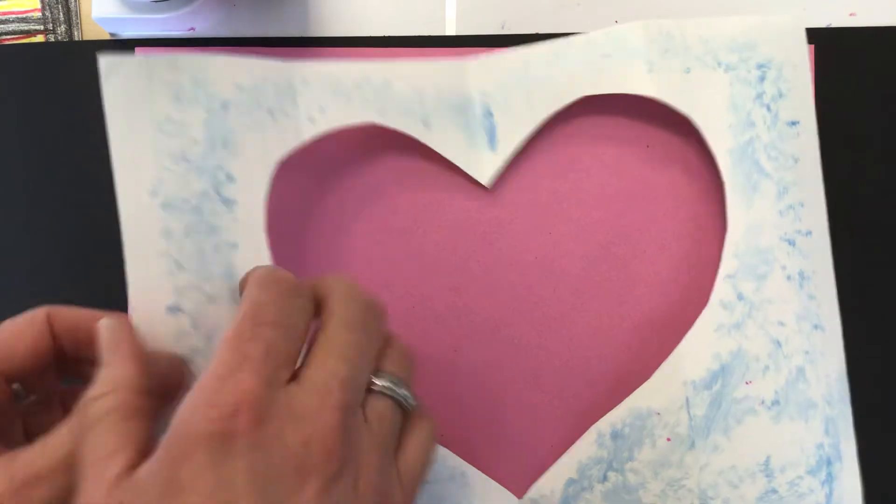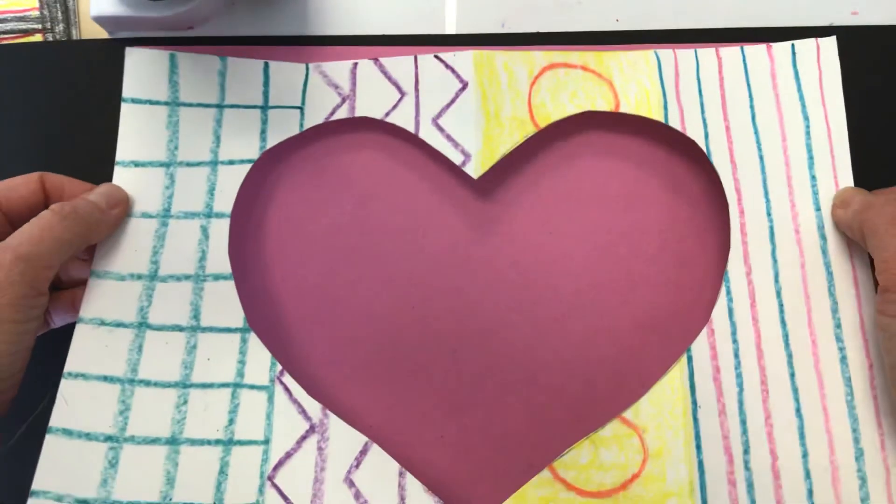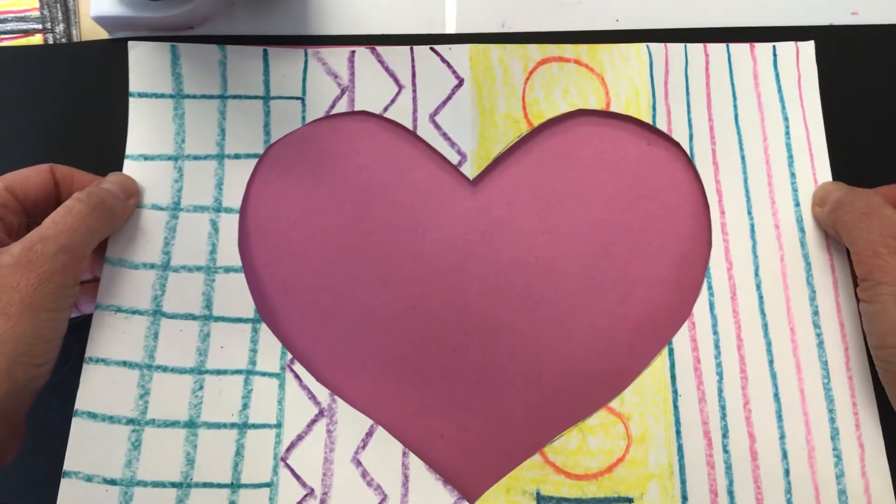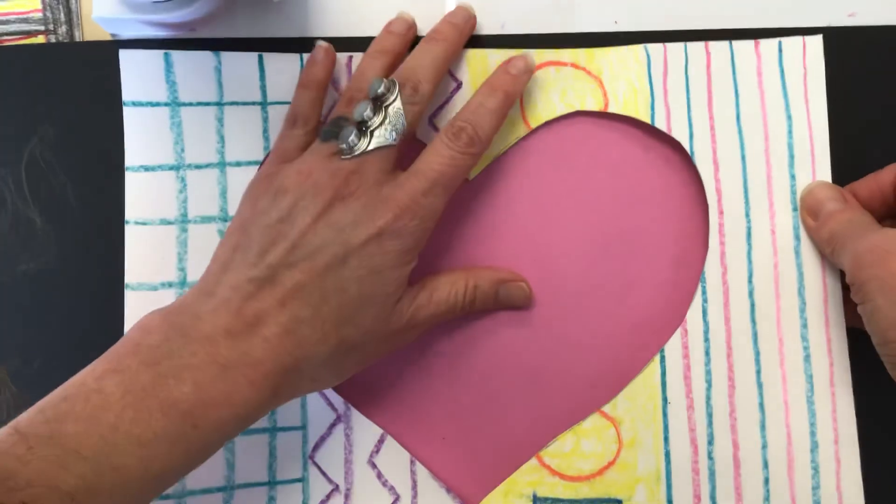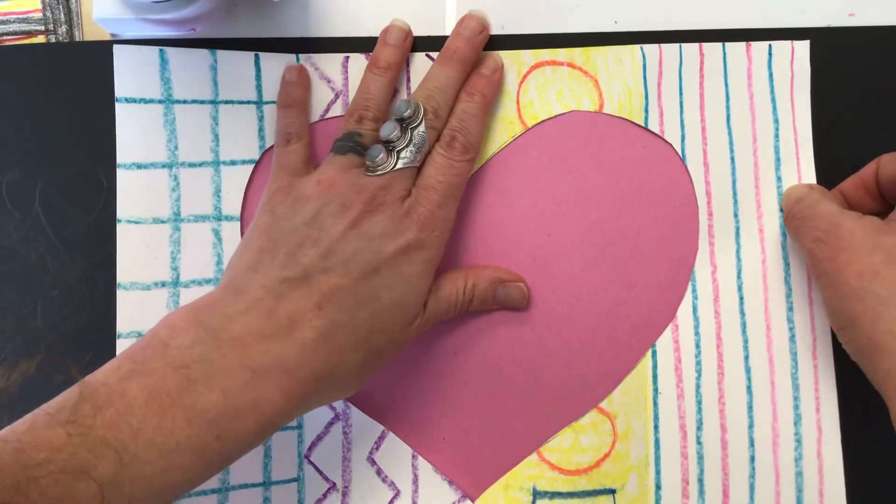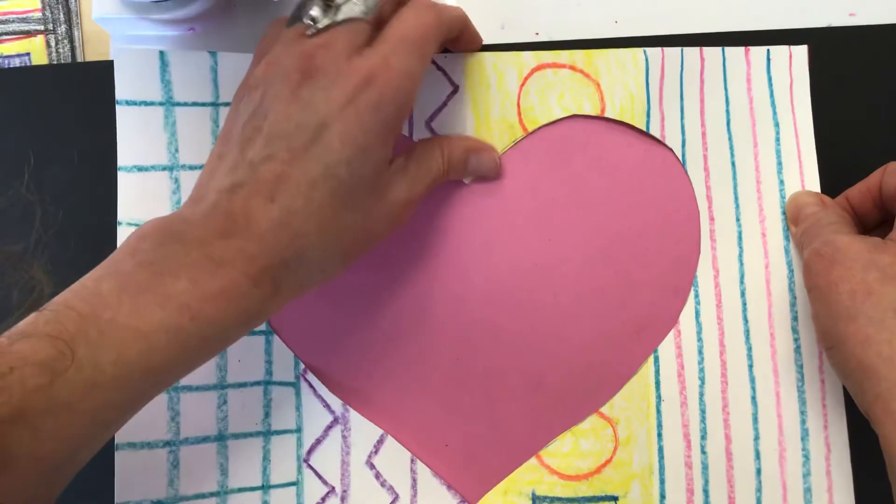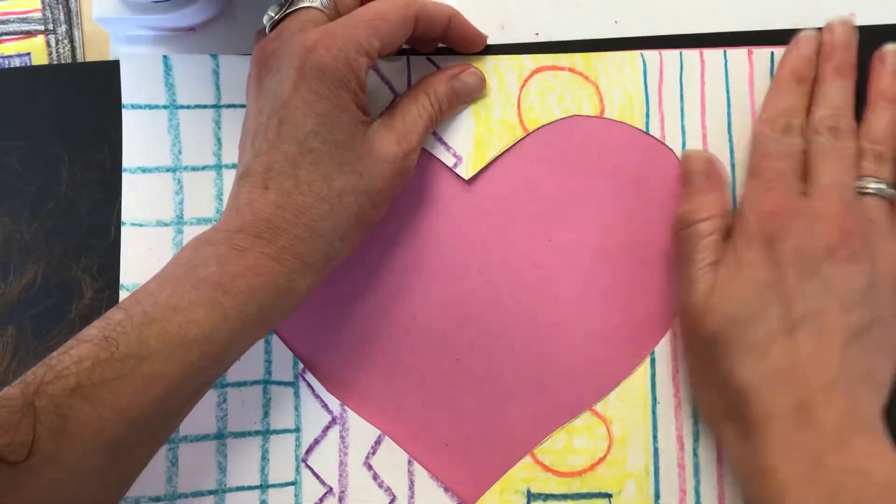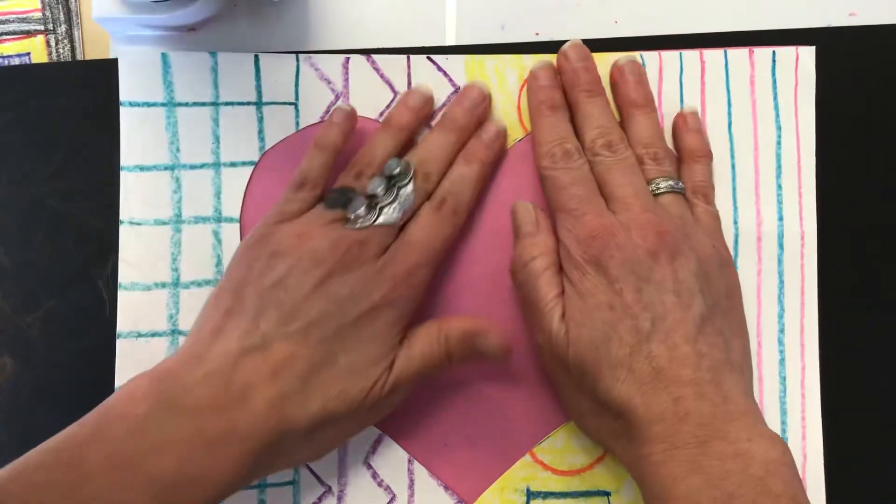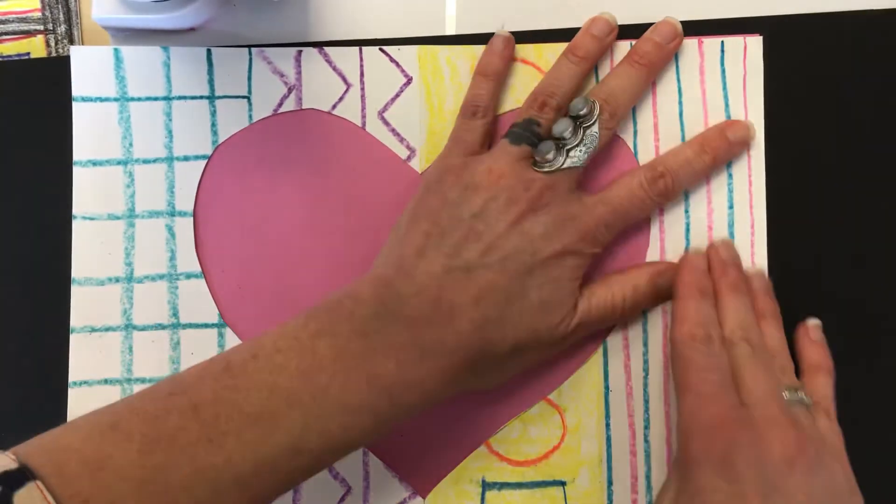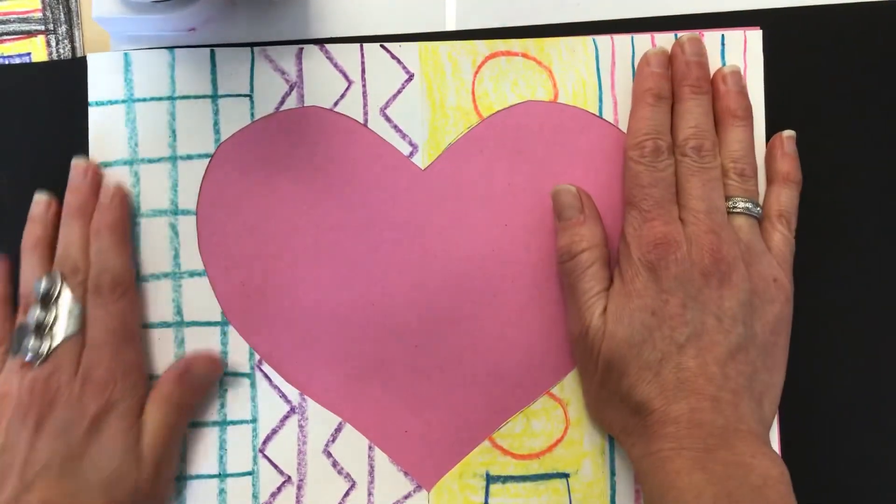Then I'm going to flip it and line up my edges. This may take you a couple of tries. I know with me it usually does. I might have to peel it back up and then re-center it. Oh, I think I got it. I'm just going to smooth it out there. Smooth it out down here and along my edges.